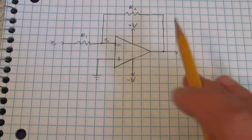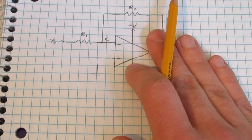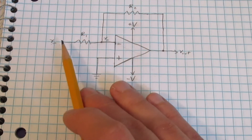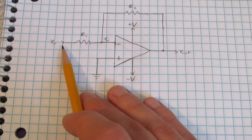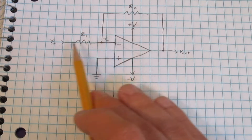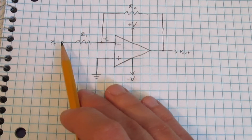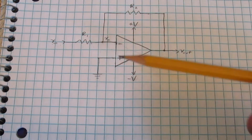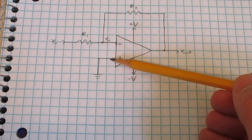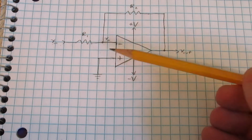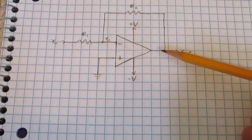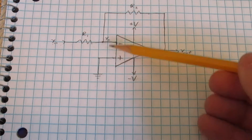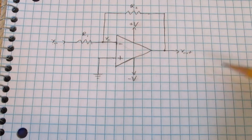For now, let's ignore the output voltage V-out. It should be pretty clear that as we increase V-in, V-minus will increase, and as we decrease V-in, V-minus will also decrease. From the video on comparators, we know that if the plus voltage is larger than the minus voltage, the output will be high, and if the plus voltage is smaller than the minus voltage, the output will be low.